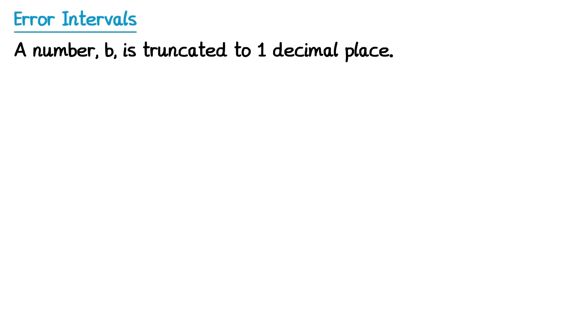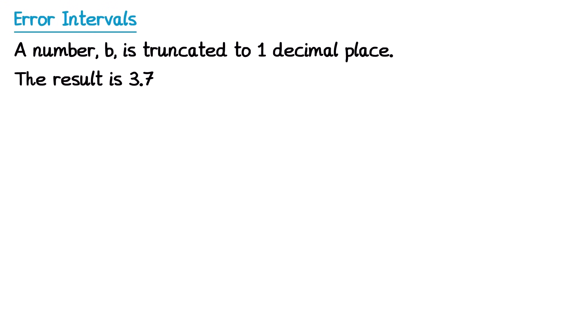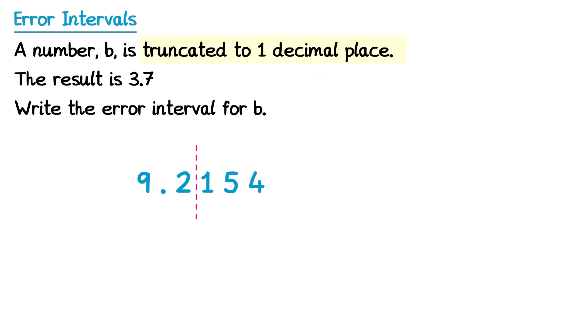In this question we have a number that's been truncated to one decimal place and we've been told it's 3.7. Sometimes rather than rounding numbers, we truncate them. Truncating is different to rounding — I'm going to show you how that works now. Imagine we had the number 9.2154. When you truncate a number to one decimal place, you can put a line after the first decimal place, and then imagine you chop the number at this point — all of the rest of the numbers fall off. So you'd end up with 9.2.